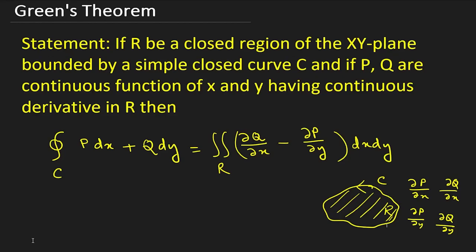Hello everyone and welcome back. In our last lecture on Green's theorem, we did only one example. In this particular lecture, we will do some more examples. Before starting, let us check Green's theorem once again. The statement is: closed integration over C of P dx plus Q dy equals double integration over R of (∂Q/∂x minus ∂P/∂y) dx dy, where P and Q are continuous functions and their partial derivatives exist.